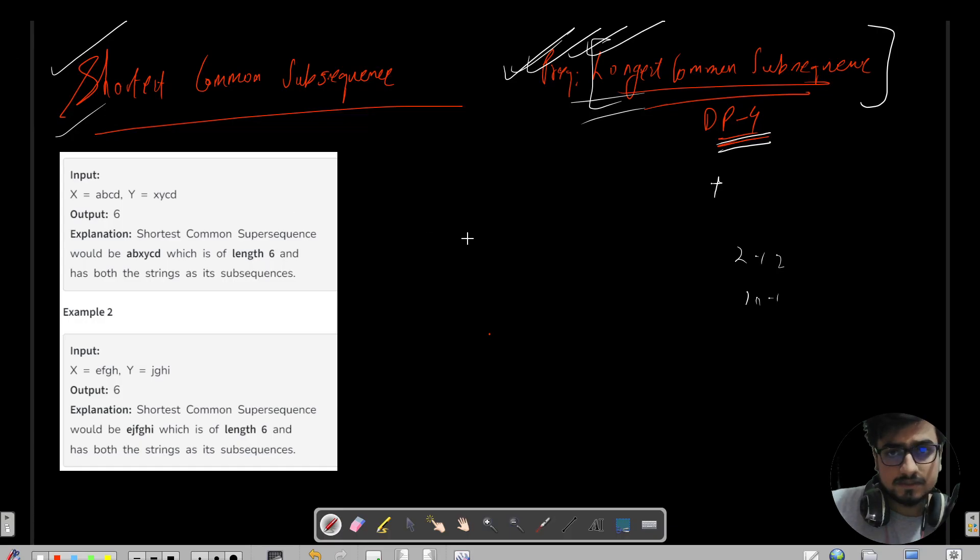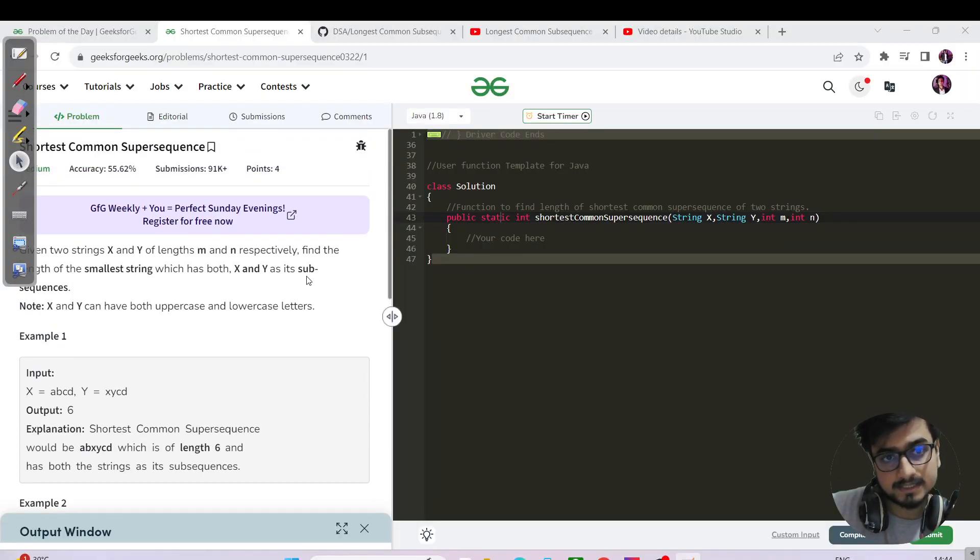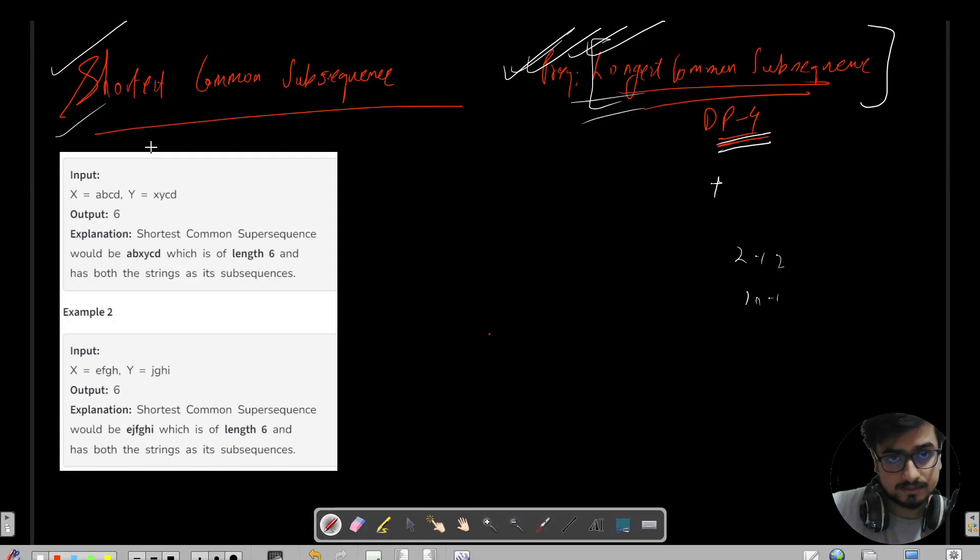Let us continue with today's question again. We need to find a string which has both X and Y as its subsequences. That means if I add the given both strings, ABCD and XYCD.